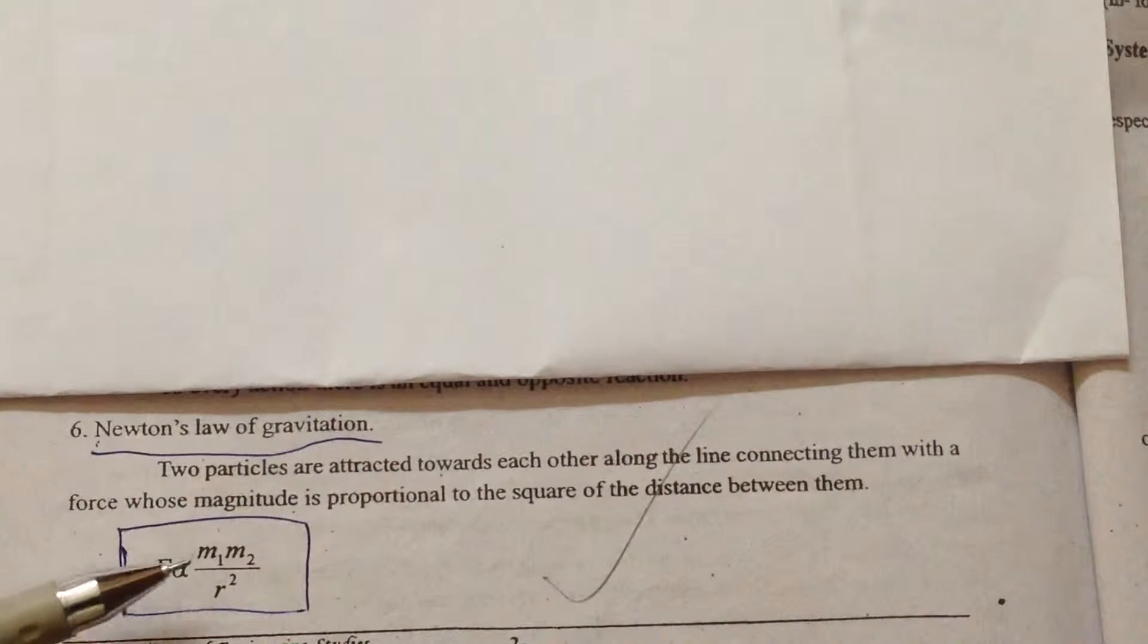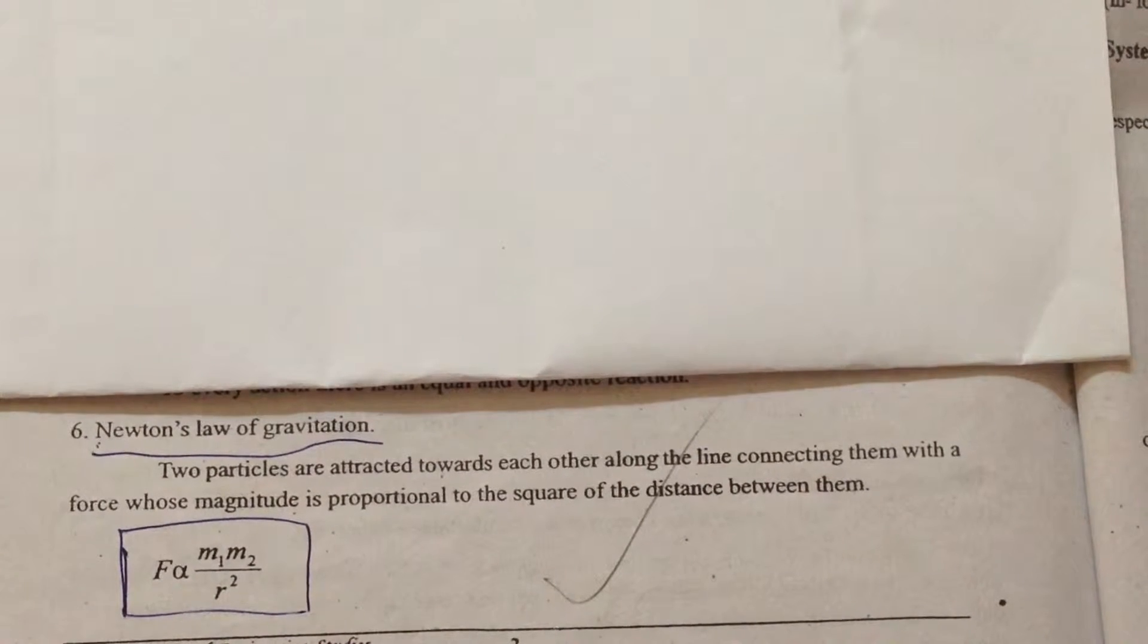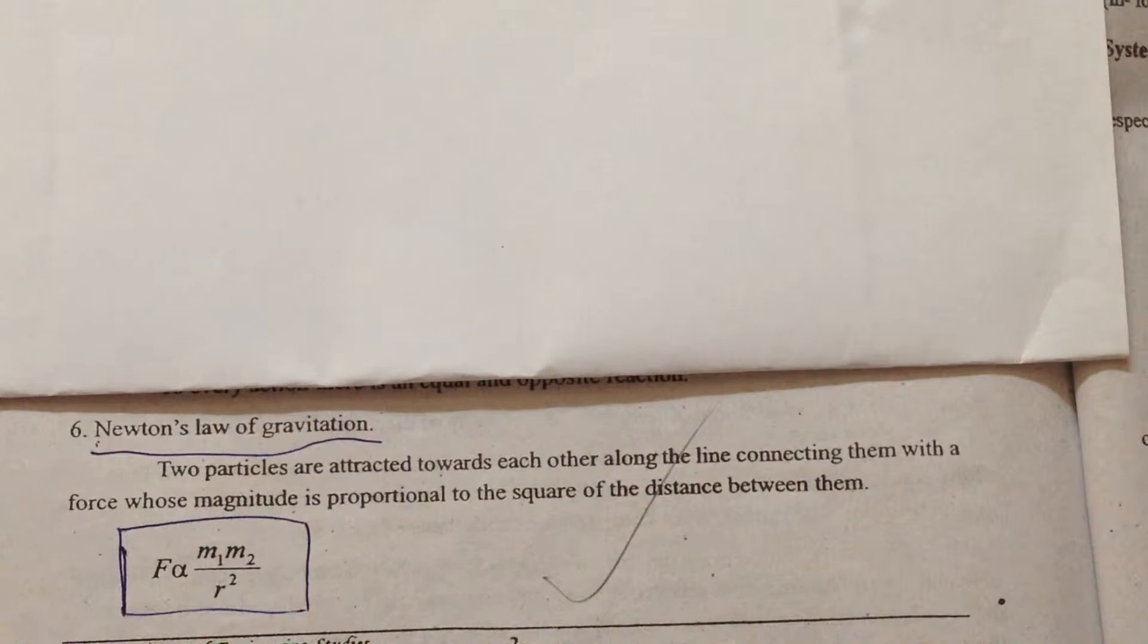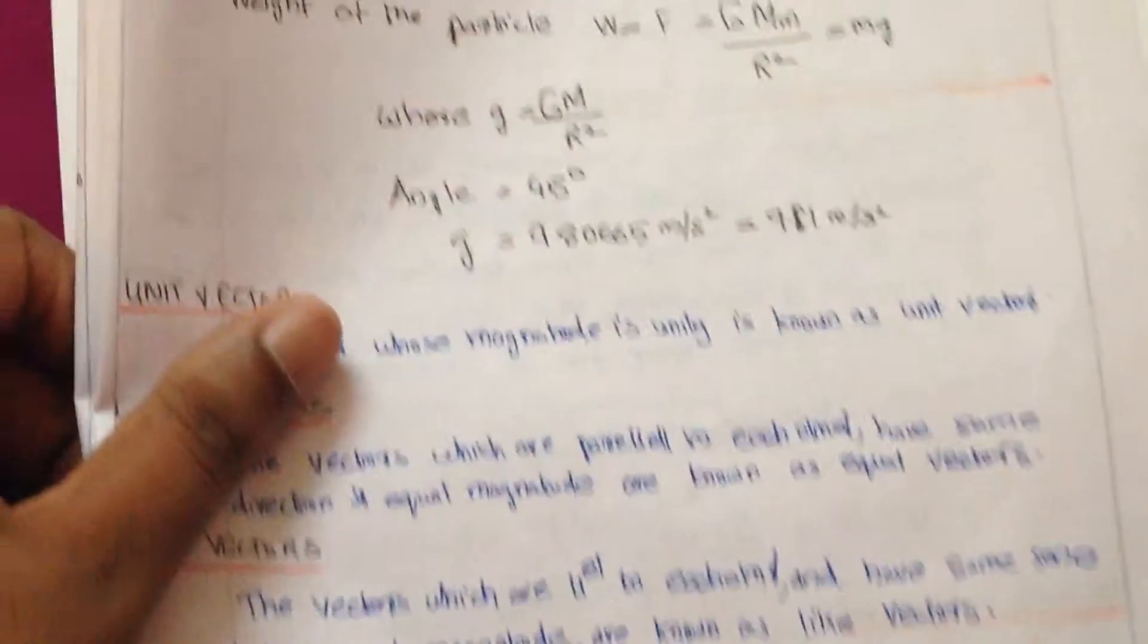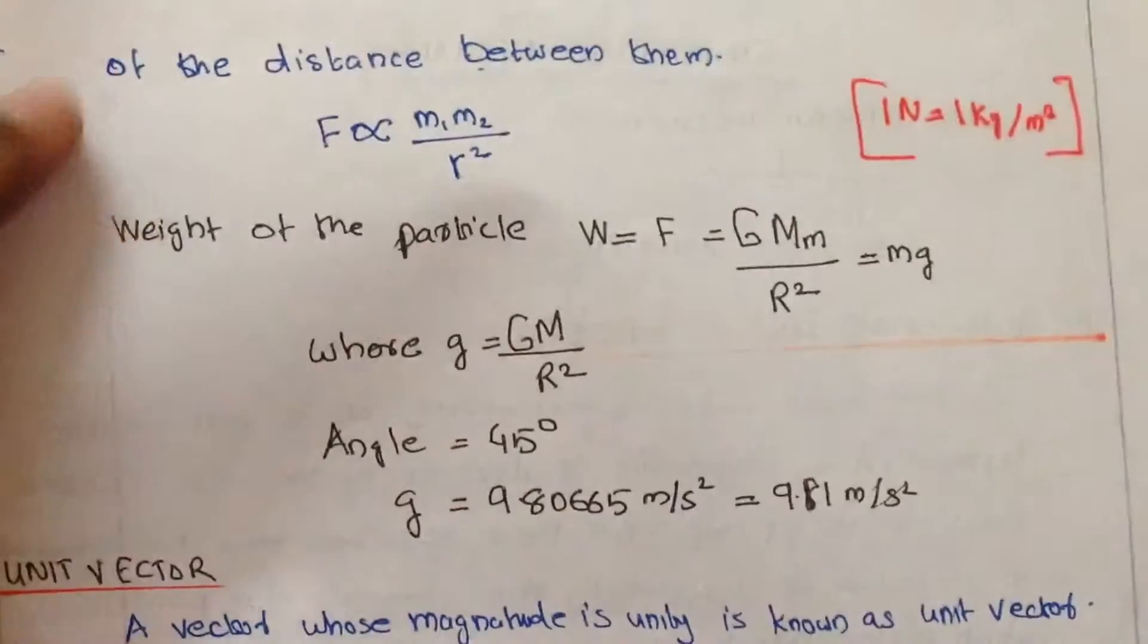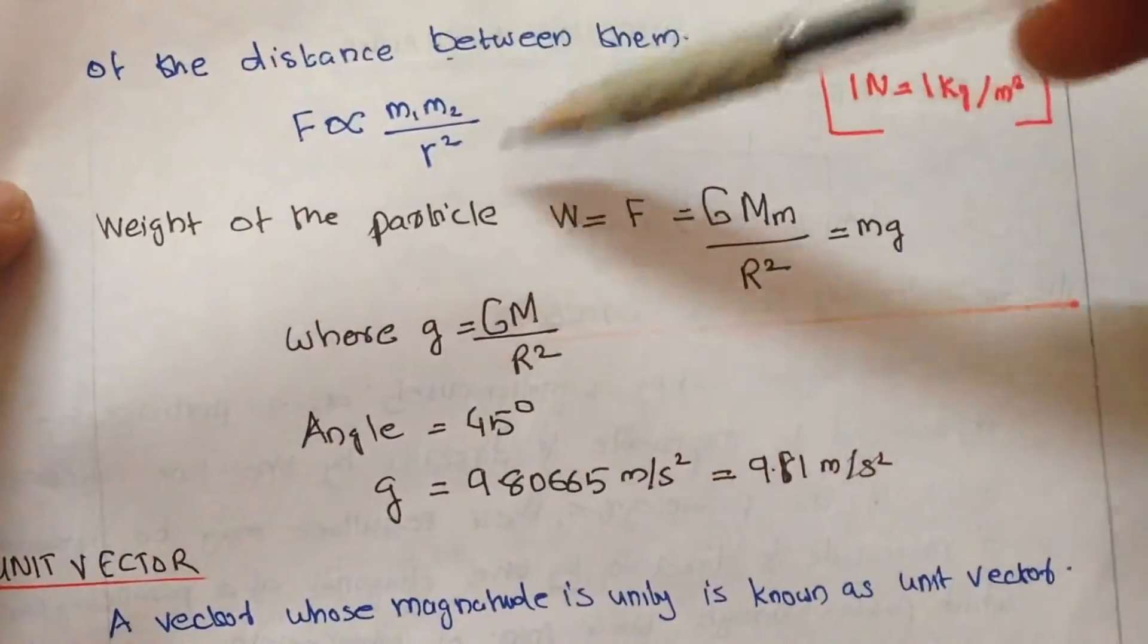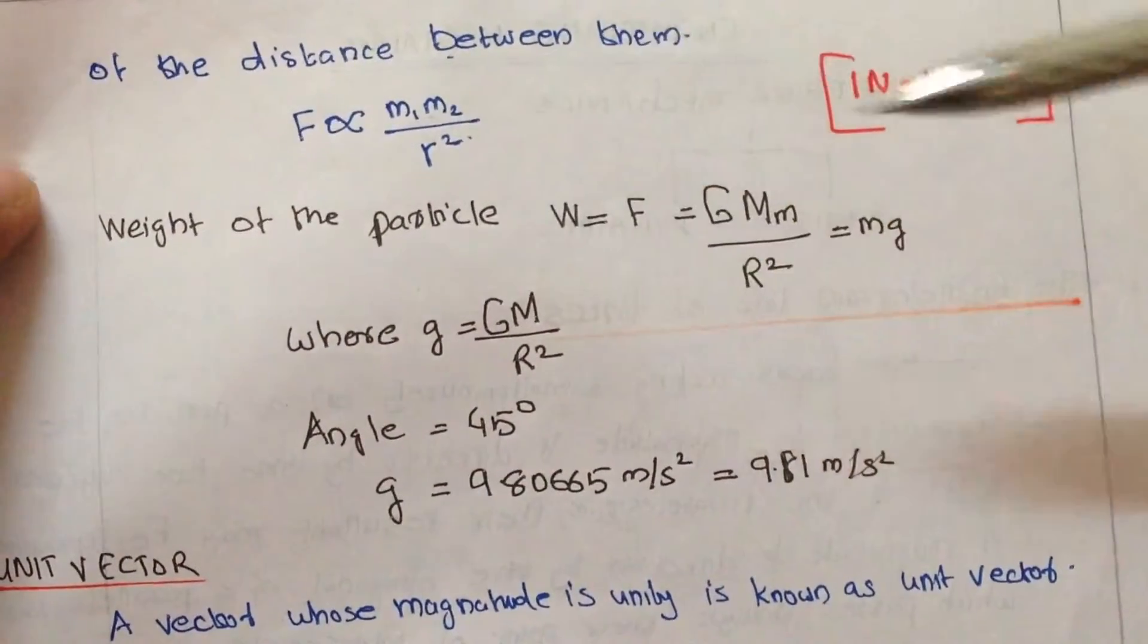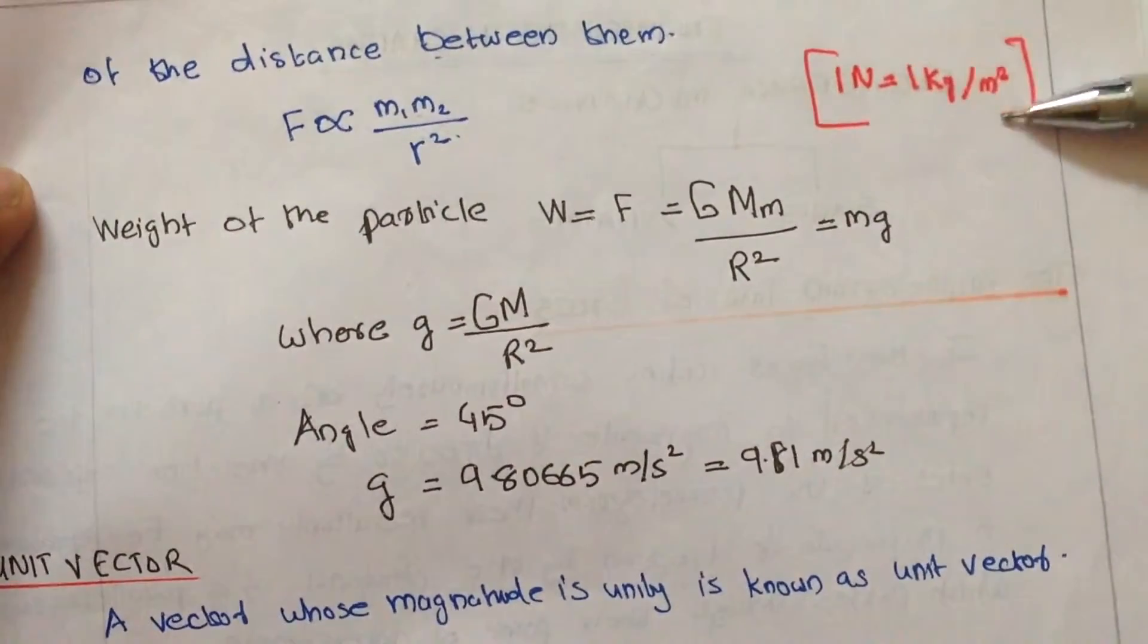So it is F directly proportional to m1 m2 divided by r squared, and 1 Newton is equal to 1 kilogram per meter squared.